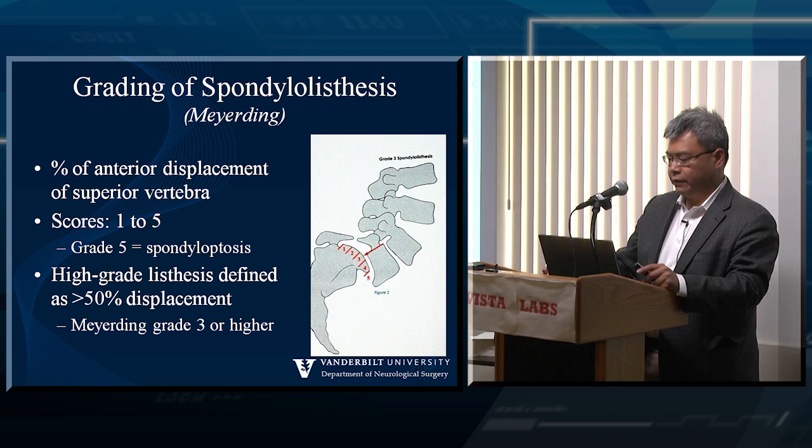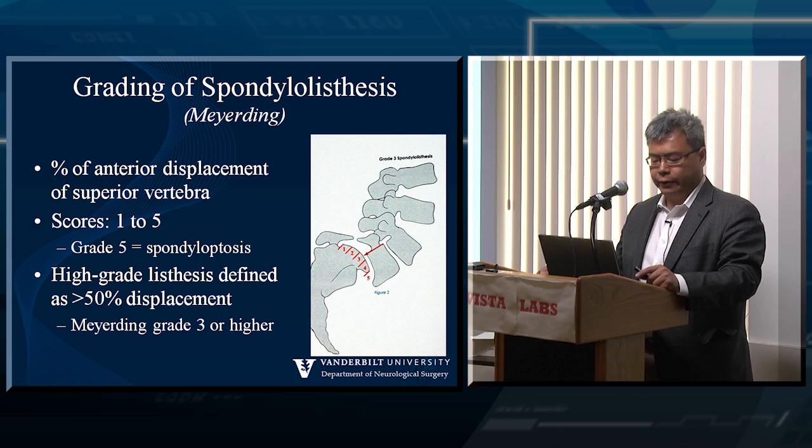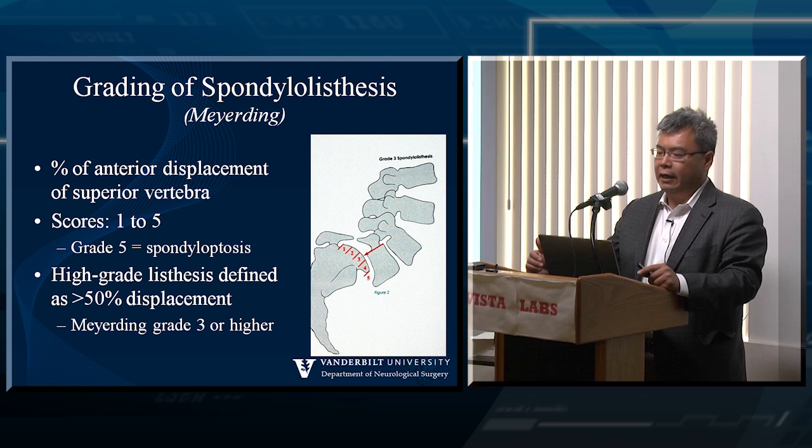We also talked about the grading of spondylolisthesis. You're all familiar with the Meyerding classification — the percentage of displacement: 0 to 25% is grade 1, up to 50% is grade 2, 75% is grade 3, and then grade 5, which is complete spondylolisthesis. We typically define high-grade spondylolisthesis as greater than 50% displacement.